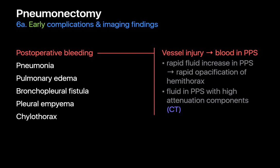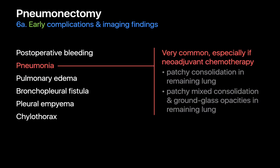We're also looking out for post-op bleeding into the post-pneumonectomy space. Normal fluid accumulation should occur over days to weeks, but if we notice a much more rapid fluid increase on serial chest x-rays, we must consider the possibility the fluid may be blood. On chest CT, blood in the post-pneumonectomy space may appear as non-uniform attenuation fluid with high-attenuation regions corresponding to fresh blood. Pneumonia is also a common complication, particularly if the patient received neoadjuvant chemotherapy and is immunosuppressed, appearing as fluffy focal or multifocal consolidation with or without ground glass opacities on CT.